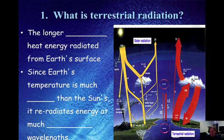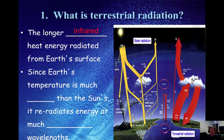We've discussed this a little bit before in the prior topic. What is terrestrial radiation? Terrestrial refers to the Earth — that's why extraterrestrial means anything from outside of Earth. Terrestrial radiation is the energy that is re-radiated from Earth's surface.